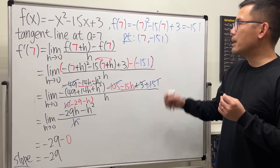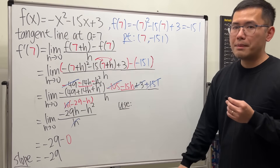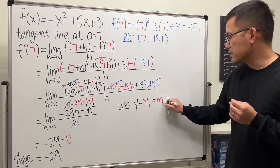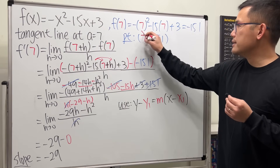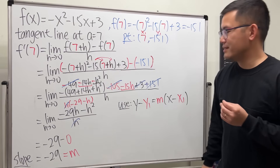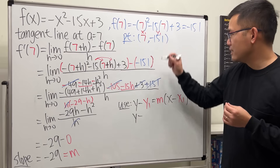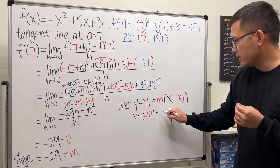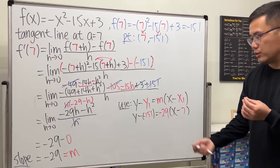We have the slope of negative 29 and the point (7, -151). Let's use point-slope form: y minus y1 equals m times (x minus x1). Here x1 = 7, y1 = -151, and the slope m = -29. Plugging in: y minus (-151) equals -29 times (x minus 7).